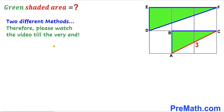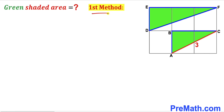In this video I am going to share two different approaches, so please watch till the very end. Here's our very first method and first step. Let's focus on right triangle ABC. We can see that the ratio of this side to this side is 1 to 2. If this side is x, then this side is going to be 2 times x.